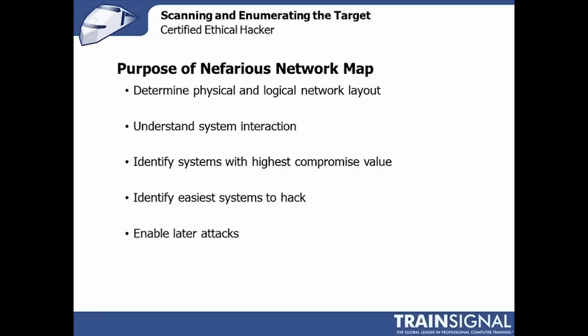For example, if you identify during a network map that a system is a domain controller, you can potentially enumerate which systems are joined to that domain. You now have a fairly clear idea of how things connect within that network. You know that client will probably talk to that domain controller frequently, so building a session between the two will most likely go undetected — versus trying to build an attack from two disjointed systems that almost never talk to each other, which may set off alarms on the administrative side.